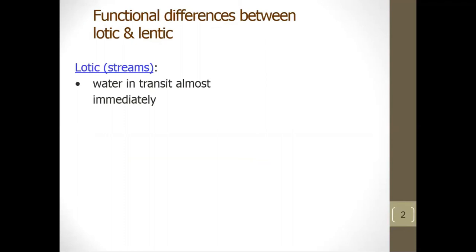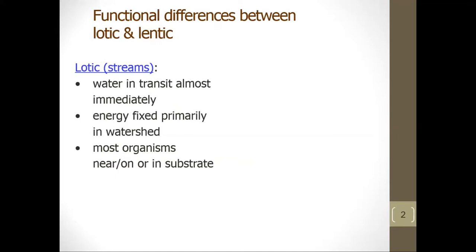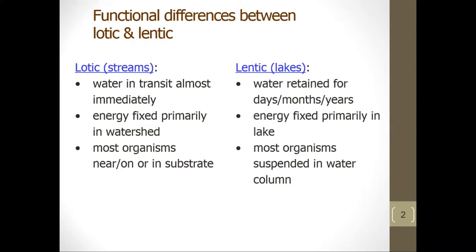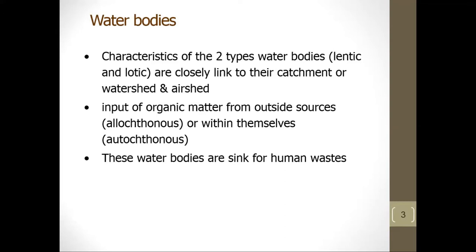This covers the functional differences between lotic and lentic systems. In lotic ecosystems such as streams, water is in transit almost immediately. Energy is fixed primarily in the watershed and most organisms are found near or on the substrate. In lentic ecosystems such as lakes, water can be retained for days, months, or years. Energy is fixed primarily in the lake and most organisms are suspended in the water column. Characteristics of both water body types are closely linked to their catchment, watershed, and airshed, and input of organic matter from outside sources, known as allochthonous, or within themselves, known as autochthonous.